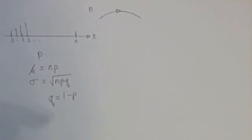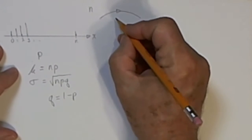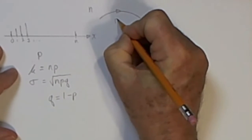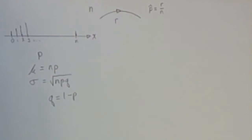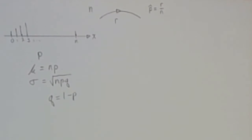Now if we take a sample from this probability distribution of size n, and we find that we have r successes, then we can calculate the proportion of successes in that sample by taking r divided by n.